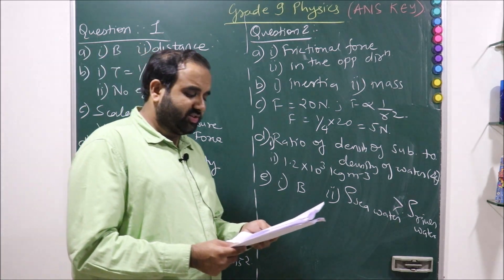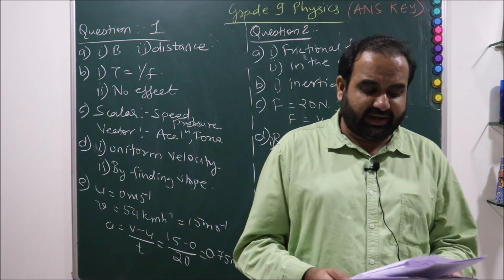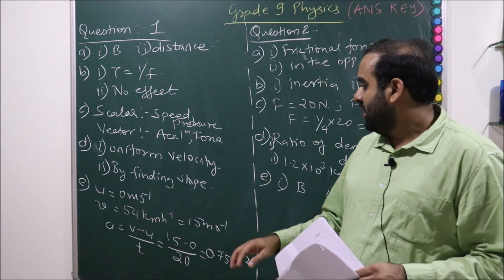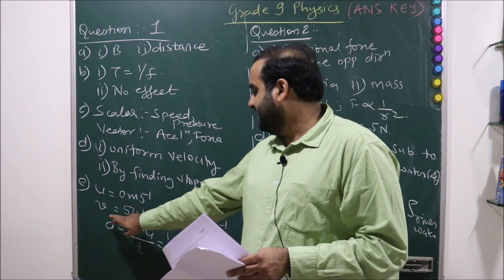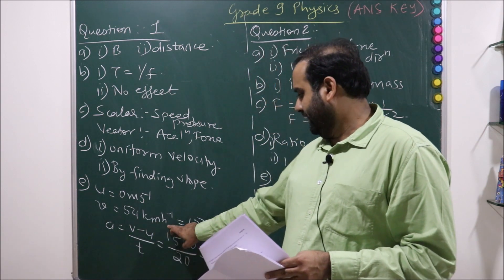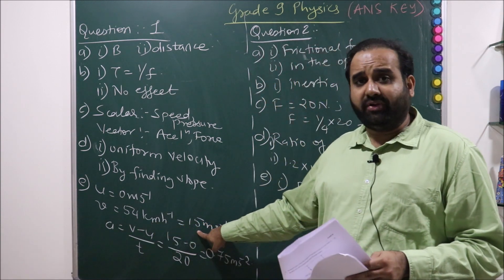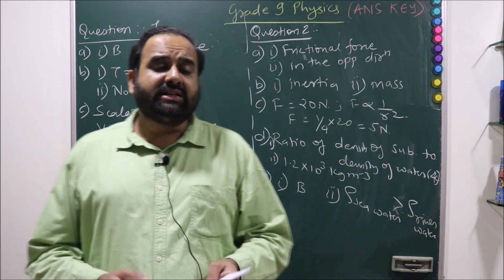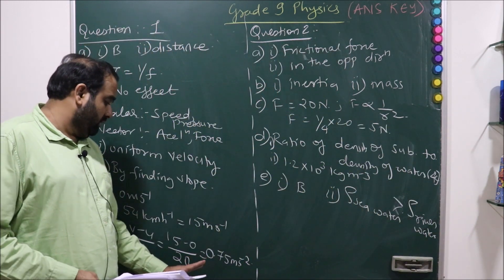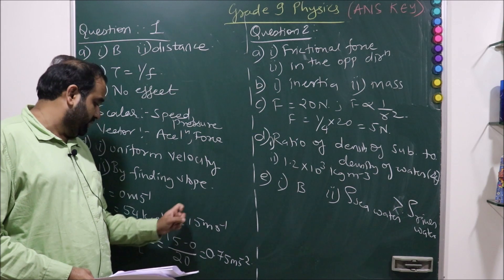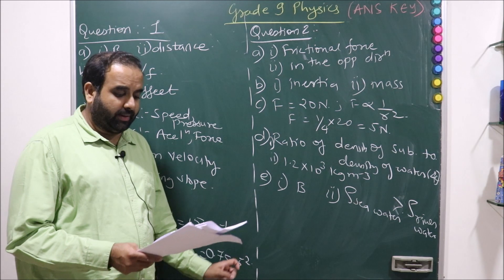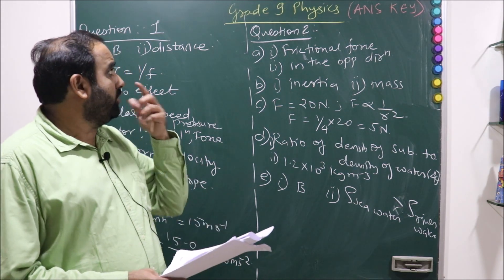A car starting from rest acquires a velocity of 54 km per hour in 20 seconds. Rest means initial velocity will be 0, final velocity will be 54 km per hour. Convert it into meters per second. A equals V minus U upon T. Substitute the formula, the answer is 0.75 meter per second square.